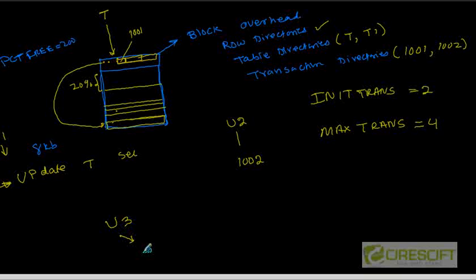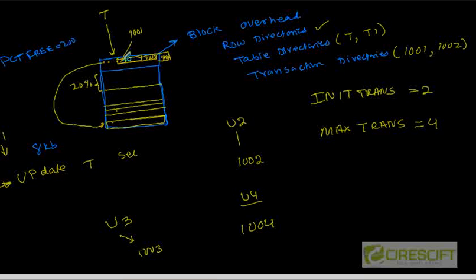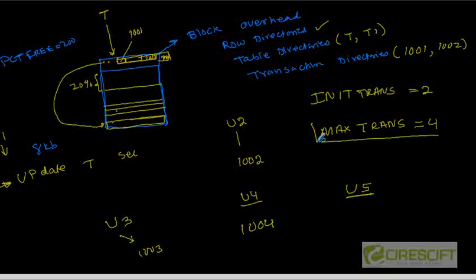Let's say another user U3 is doing an update to another row — the transaction ID is 1003. The array extends and stores 1003. Then another user U4 updates another row with transaction ID 1004, so we now have 1004 as well. So right now we have reached the maximum number of transactions — 1001, 1002, 1003, 1004. Let's say another user U5 is trying to update another row; he comes here but there's no additional slot in the transaction directory because our max trans is 4.